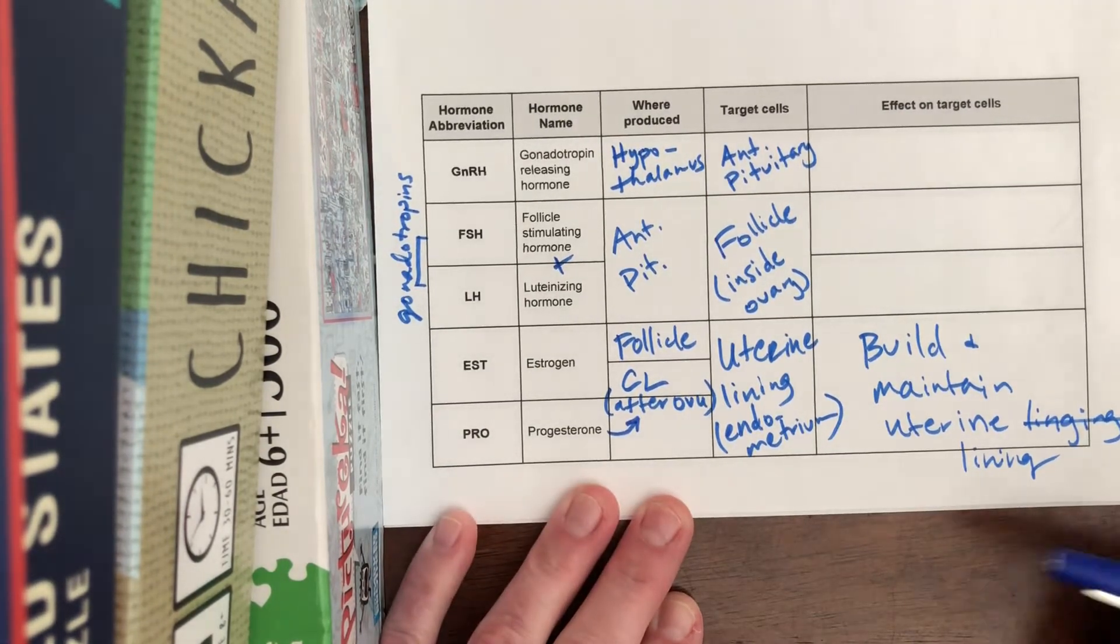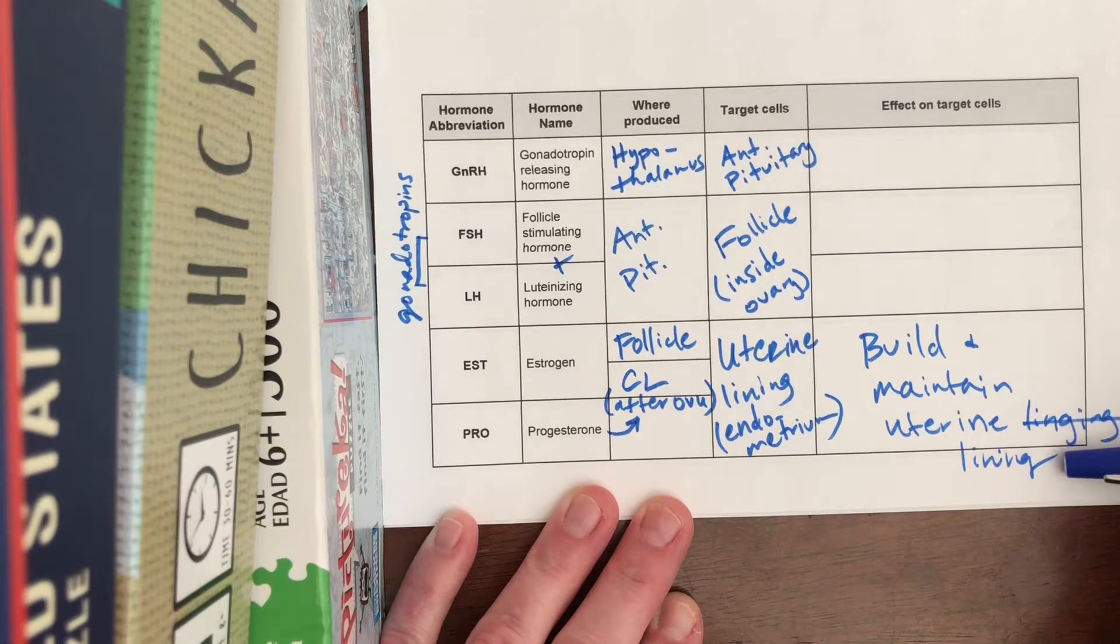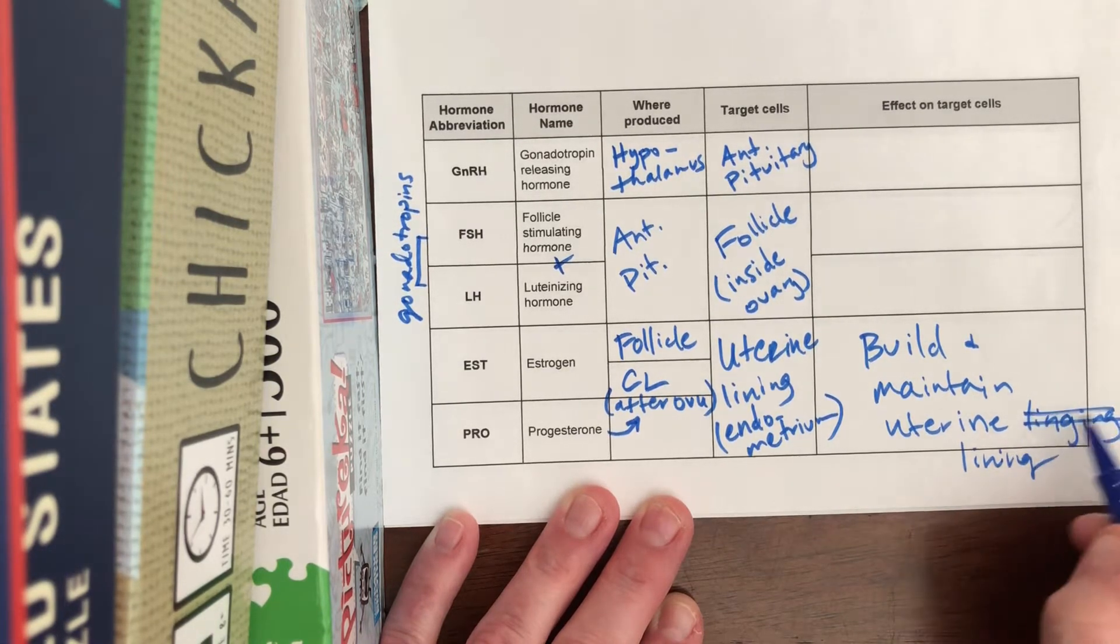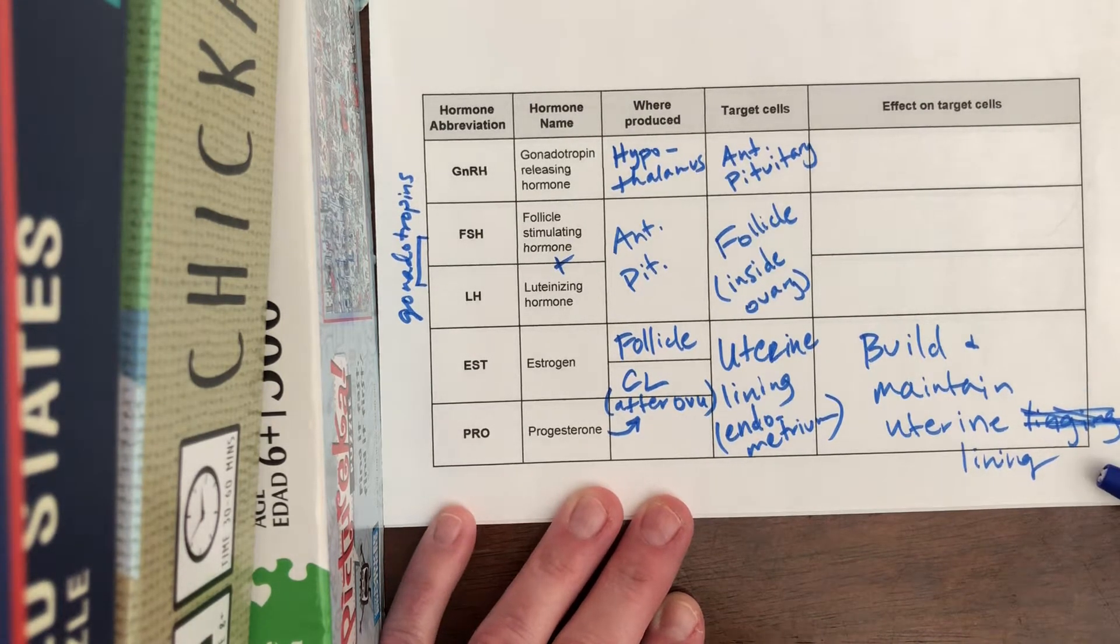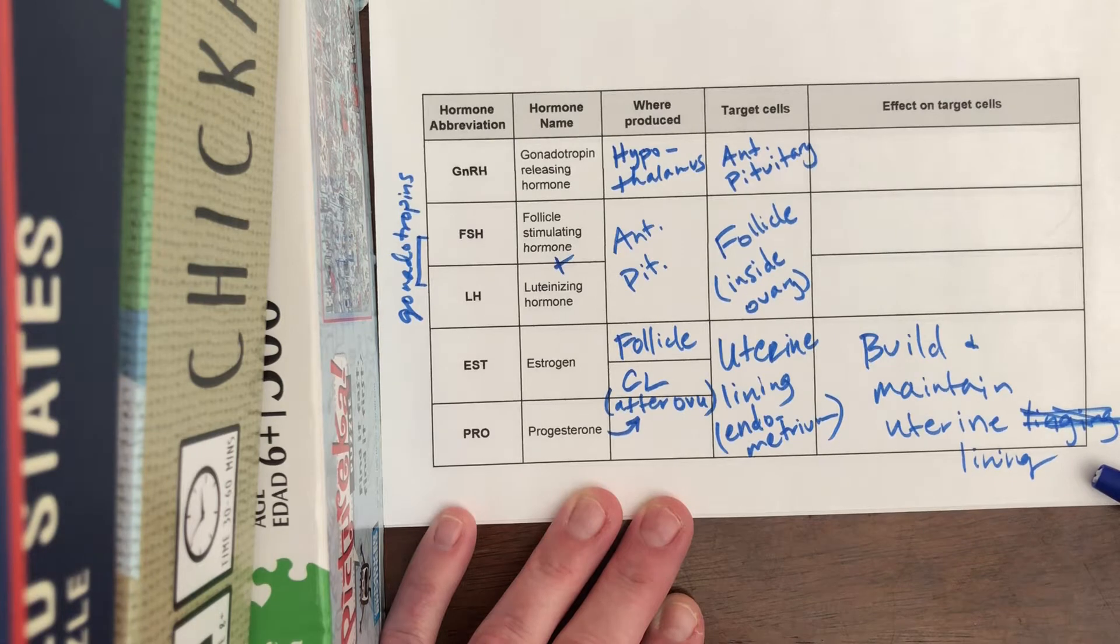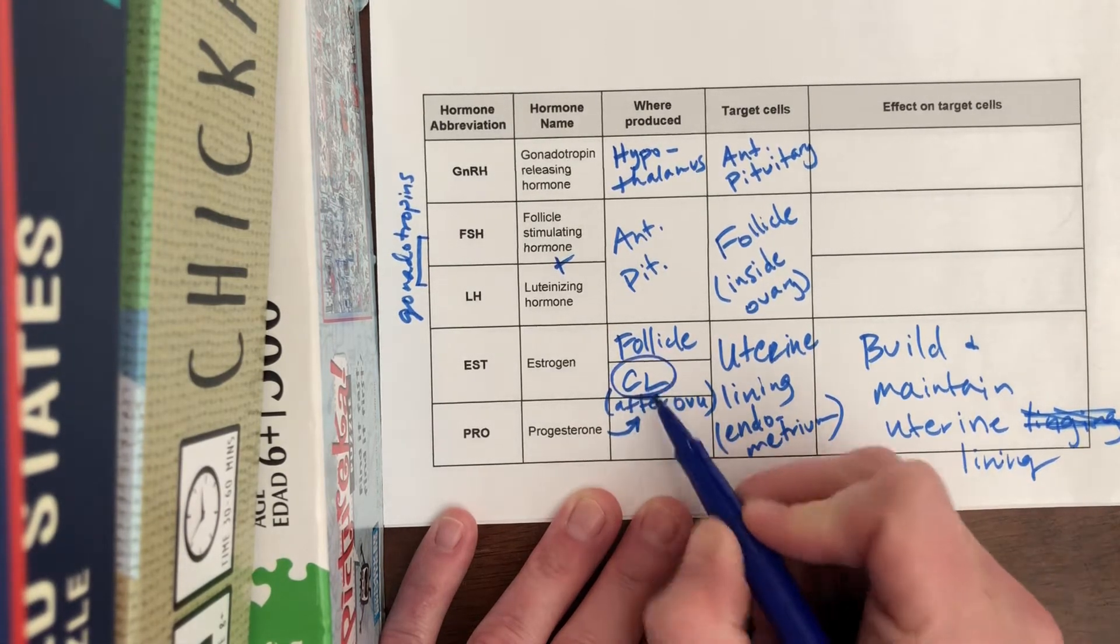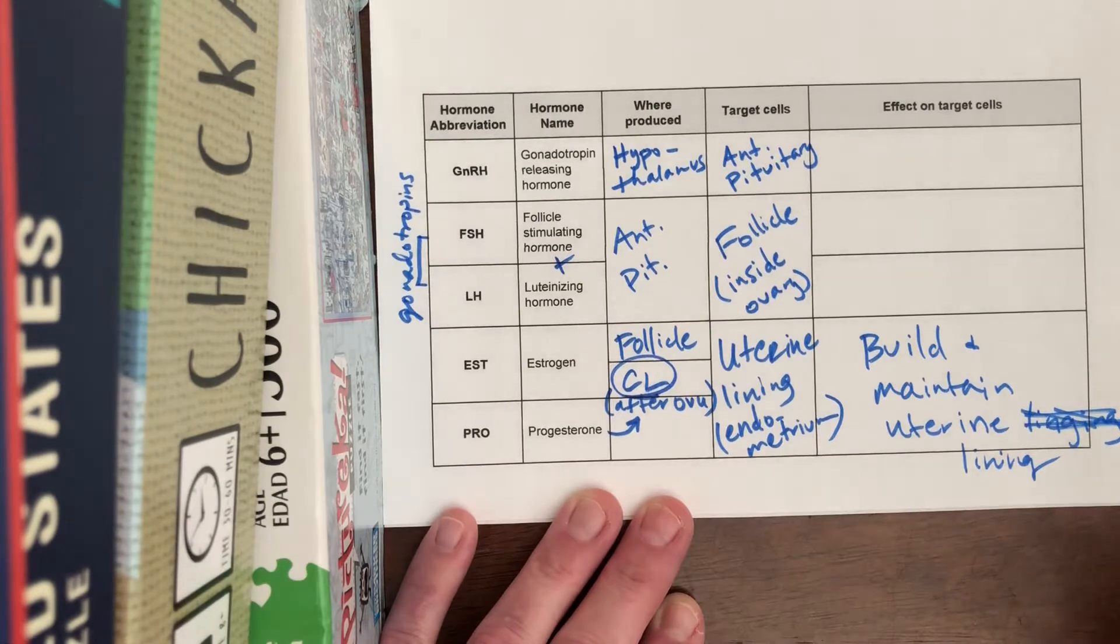And while both these things maintain the uterine lining that I misspelled the first time, most of the time that uterine lining's gotta go because most of the time a female's egg does not get fertilized. So the onset of a female's period begins with the corpus luteum dying. That's review from last time.